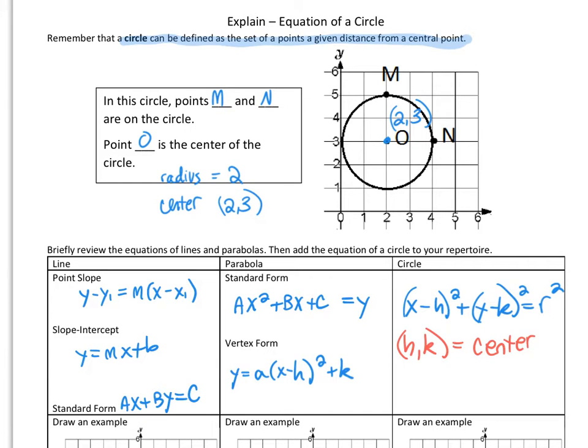From this equation, you can find the center of the circle. It'll be located at (h, k). And you can also see the radius, because the radius will be equal to r. So from the equation, you can tell a lot about a circle.